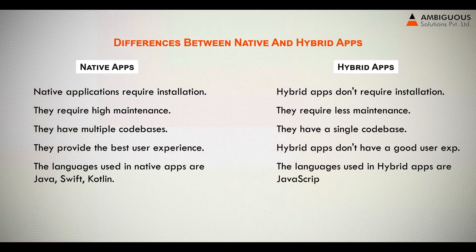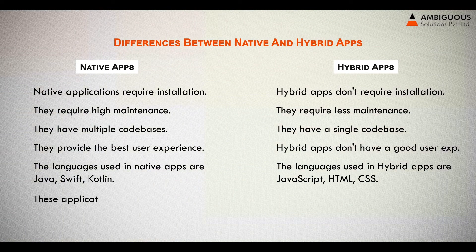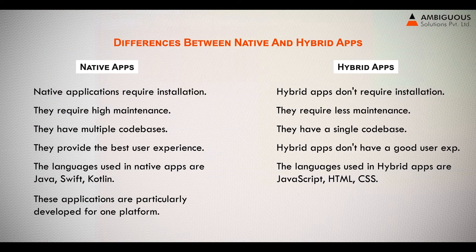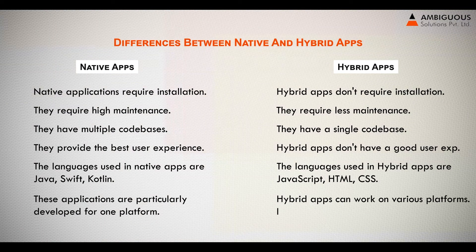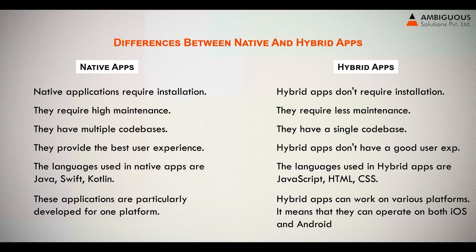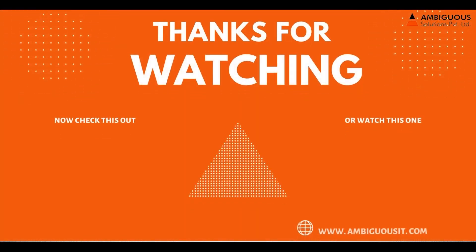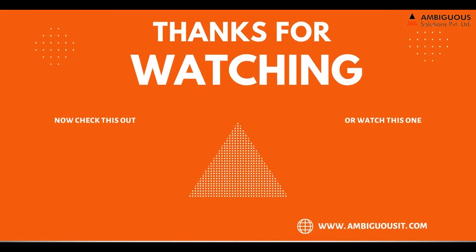Languages used in hybrid apps are JavaScript, HTML, and CSS. Native applications are particularly developed for one platform, whereas hybrid apps can work on various platforms — they can operate on both iOS and Android. Thanks for watching.